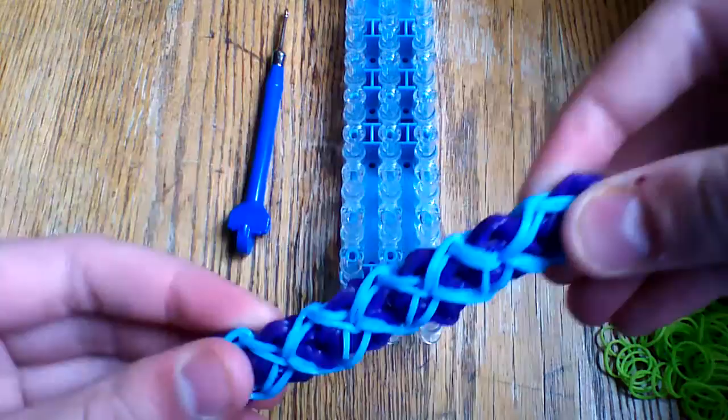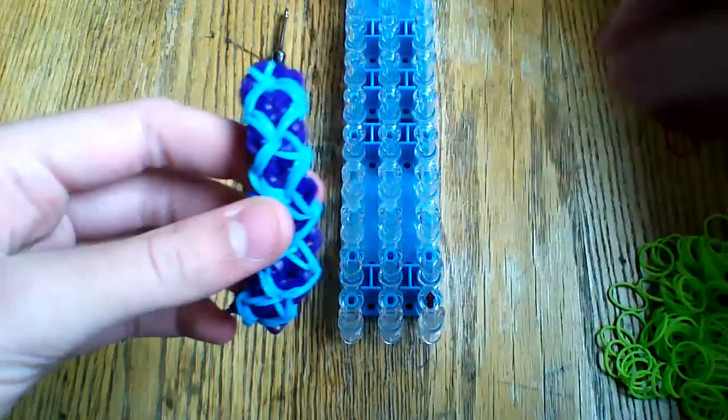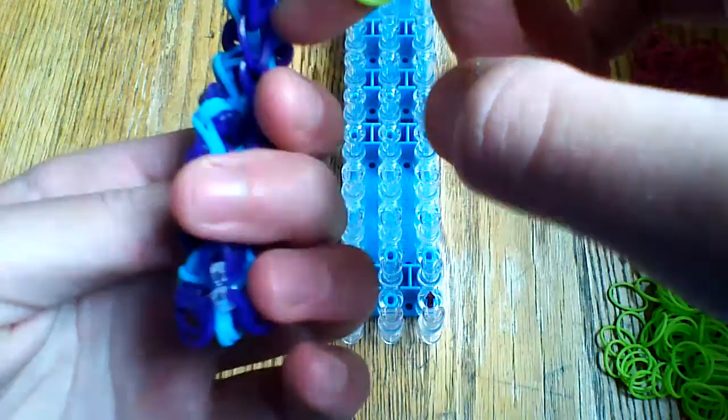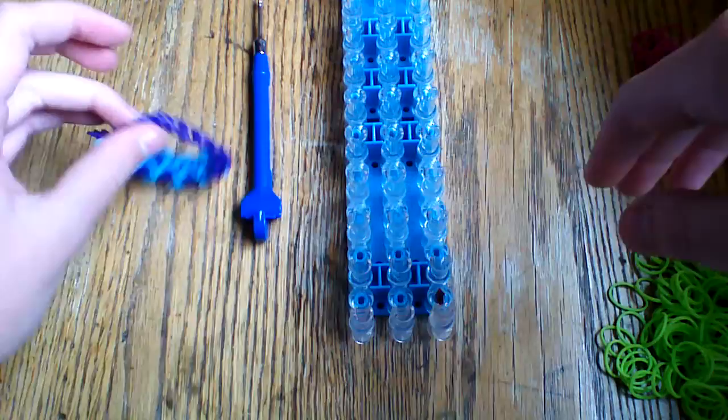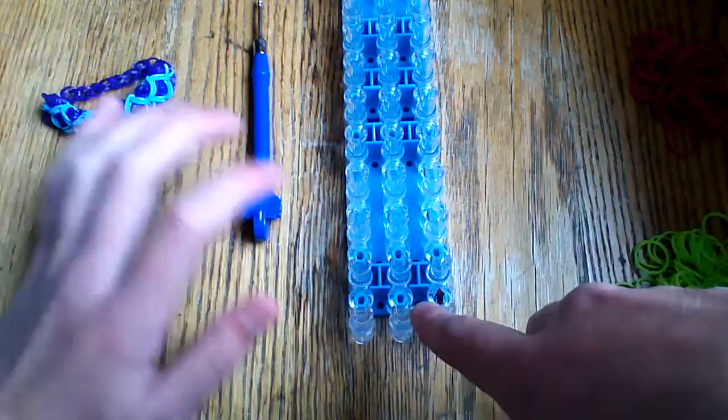And today I will be using the fuchsia bands for this neon blue right here, and neon green for the dark purple, whatever it's called. So you're also going to need a hook and a C-clip, and you might need some bands for an extension if you're only using one loom long. You can always make it more than that if you have more than one loom. So let's get started.